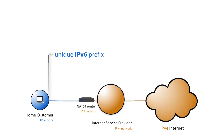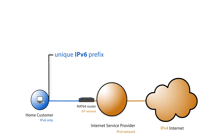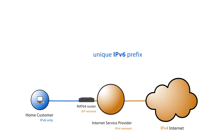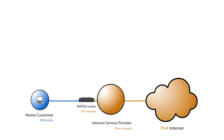The IPv6-only customer is connected to the ISP's IPv4 infrastructure through a NAT64 router. When the customer wants to connect to an IPv4 network, the provider maps the IPv6 prefix into IPv4. For a typical residential to internet service provider connection, this would mean the inside interfaces would be IPv6-only, and the outside interface would be IPv4-only.